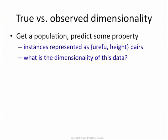I start playing around with it in WEKA, doing plots of the various attributes, and I find that they're numeric. Height is measured in inches, and 'refu' seems to be measured in centimeters. And they do seem to be highly correlated. But I would still say it's a two-dimensional dataset.